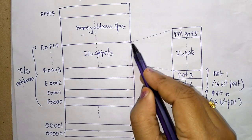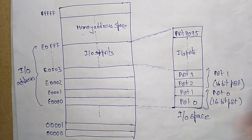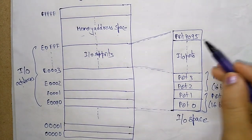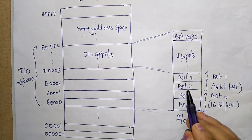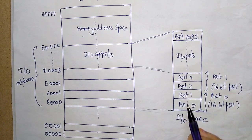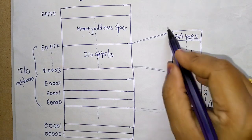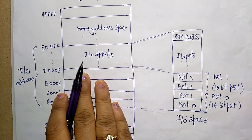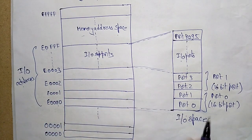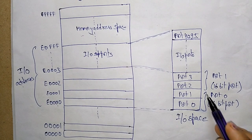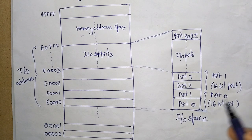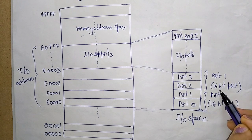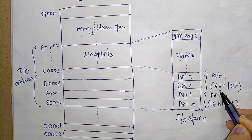The I/O ports start at address location 0x4095. These are the I/O ports: port 3, port 2, port 1, and port 0. Port 1 and port 0 are allocated as a 16-bit port, whereas port 3 and port 2 form another 16-bit port.